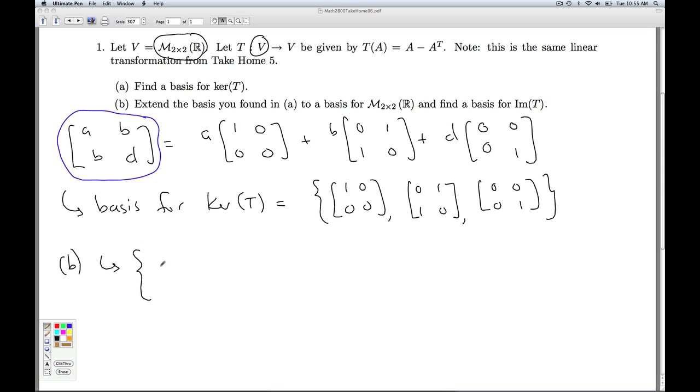So I claim that if I take this guy, this guy, and this guy, and I'll add in this guy [0,1,0,0]. This is not of the form ABBD because on the off diagonal, these entries are different. So I claim that's linearly independent.